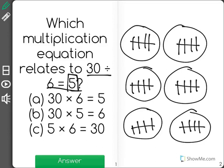Now, looking at my answer choices, I could see that 30 times 6, looking at the picture, I don't have 30 groups of 6,